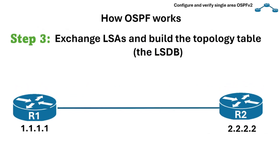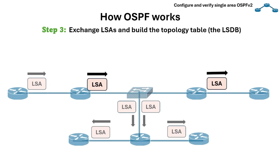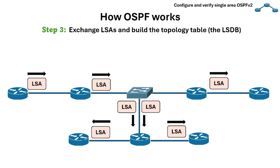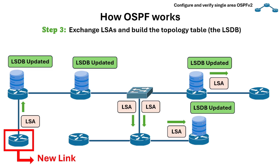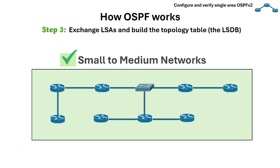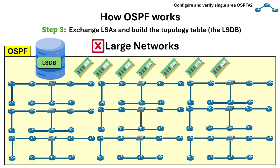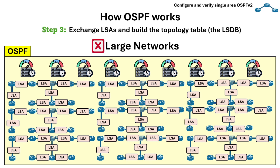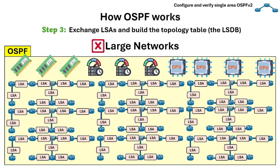Next is step three: exchange LSAs and build the topology table, or the LSDB. Once all routers in the network reach a full state, they start exchanging link state advertisements, or LSAs. These LSAs are flooded across the whole network so that every router has the same link state database, and all routers update their LSDB and recalculate the routes. This works smoothly in small to medium networks, but in large networks, OSPF can struggle because the LSDB can become huge and require more RAM, use up more bandwidth, and running SPF often uses a lot of CPU. In short, OSPF keeps all routers in sync by flooding LSAs, but this can get heavy in very large networks.